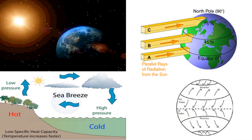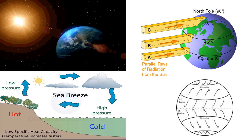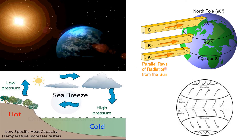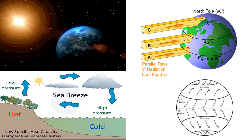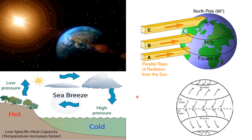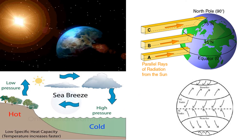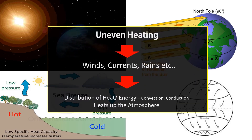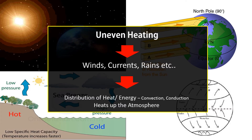Energy received from the sun causes uneven heating of the earth's surface. This could be because of day and night, or because of energy received differently at different latitudes. This uneven heating causes winds, ocean currents, rains, etc., and this is a mechanism of distribution of heat or energy on the surface of the earth.